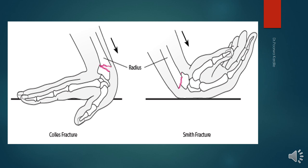This slide shows fracture at the distal end of the radius. The first figure is of Colles' fracture and the second is of Smith's fracture. When a person falls on outstretched hands, the scaphoid and lunate carpal bones transfer force over the distal end of radius, resulting in dorsal angulation — the dinner fork deformity — in Colles' fracture.